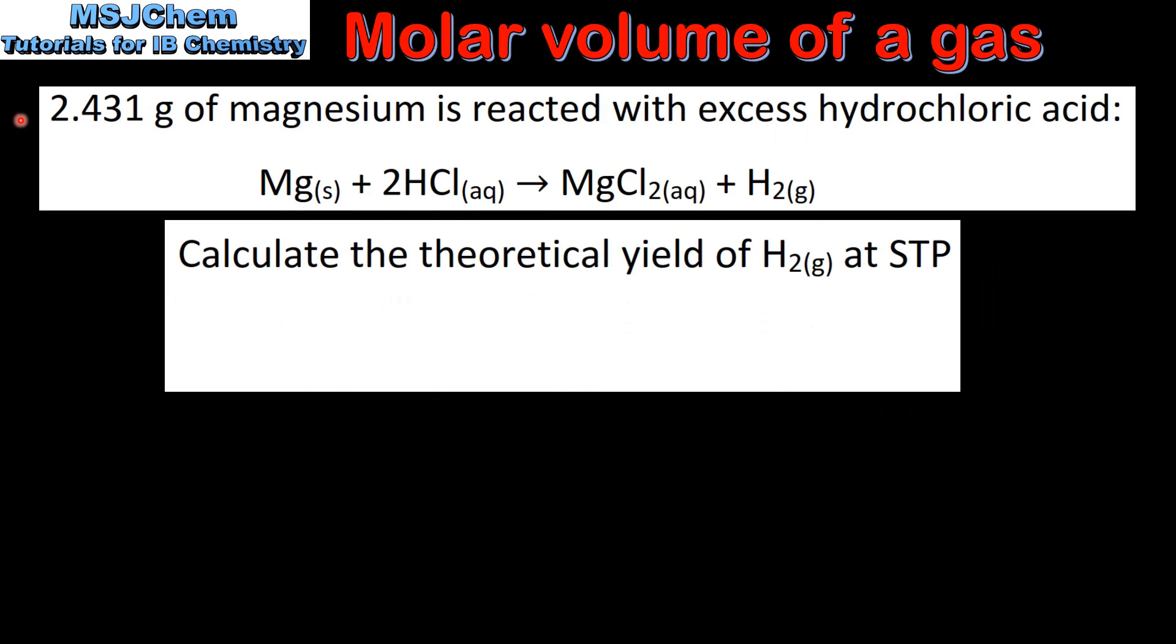In our next example, 2.431 grams of magnesium is reacted with excess hydrochloric acid according to this equation, and we'll calculate the theoretical yield of hydrogen gas at STP.